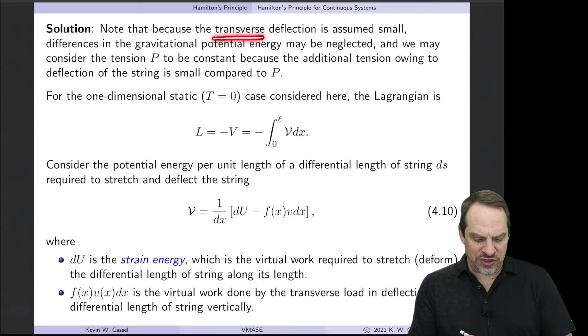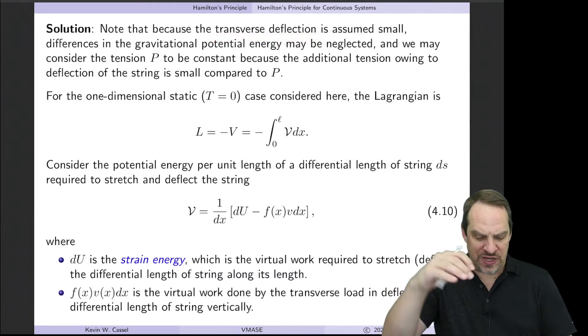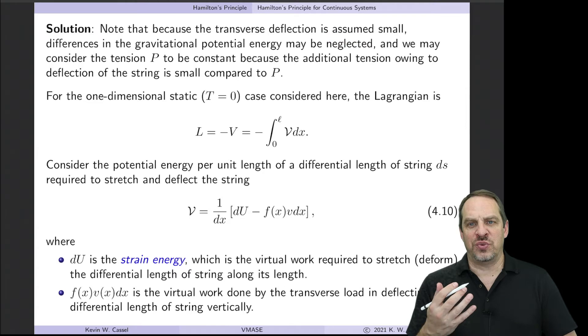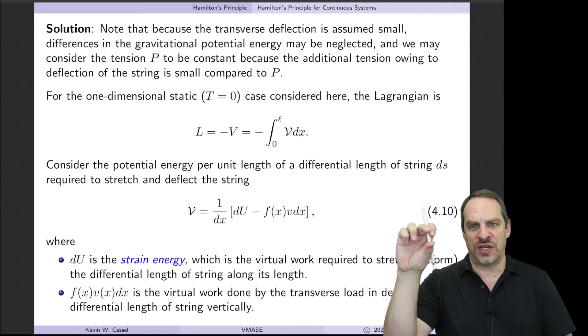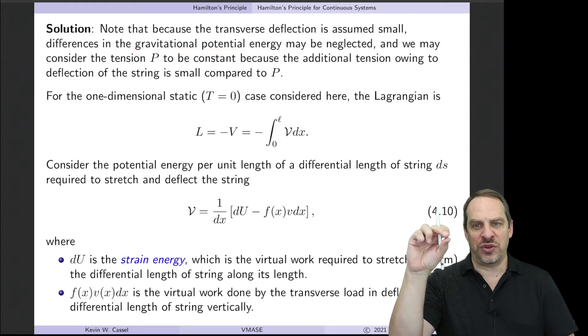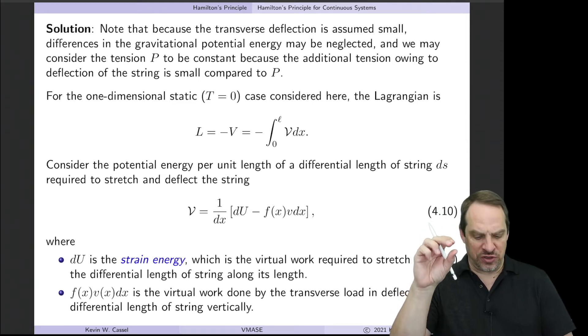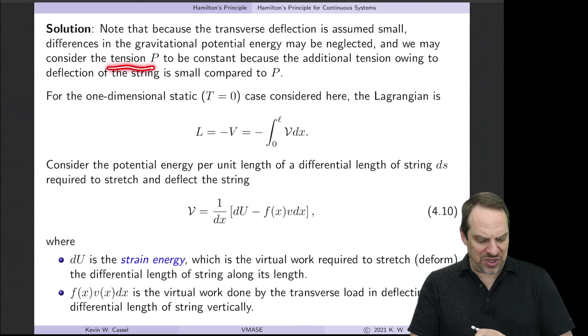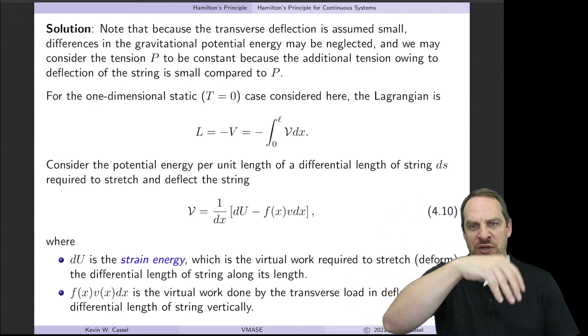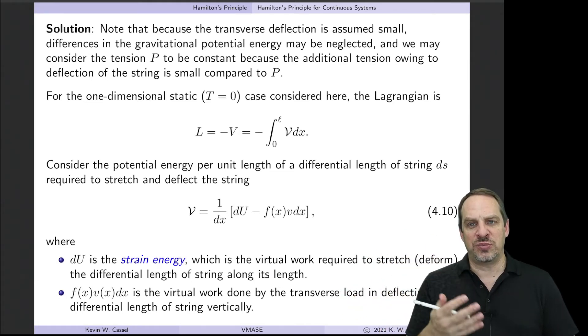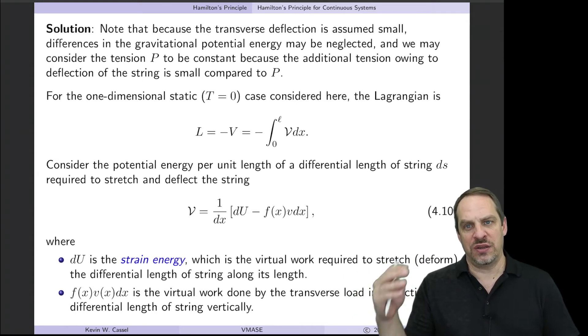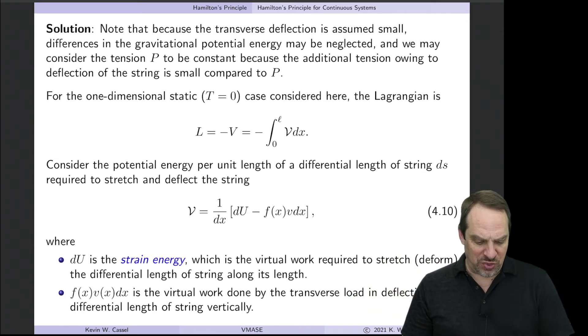Now we're going to make an assumption here, and that is that the transverse deflection, so V of X, is assumed to be small. And that results in really two simplifications. First of all, the gravitational potential energy, because of the deflection of the string, we're going to neglect. We're going to say that the deflection is so small that changes in gravitational potential energy are negligible. And the second consequence is that the tension, P, will be assumed to be constant. Normally, if you had a string in tension, and you put a lateral load on it, that would increase the tension. But we're going to say that the lateral force, F of X, is small enough compared to the P that it doesn't change the P. And that's why it's a small deflection.